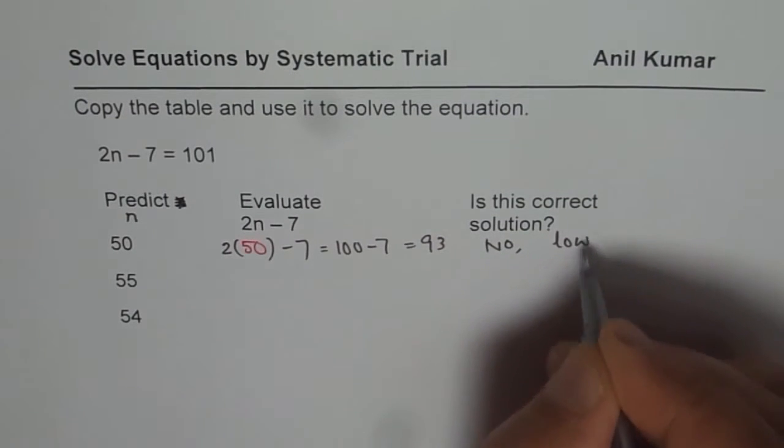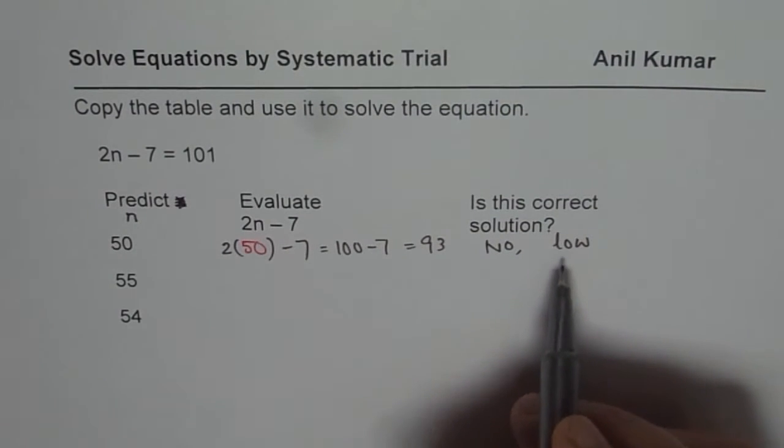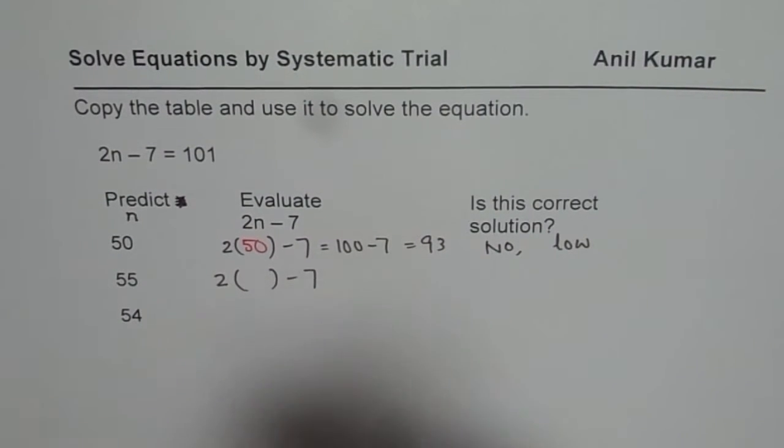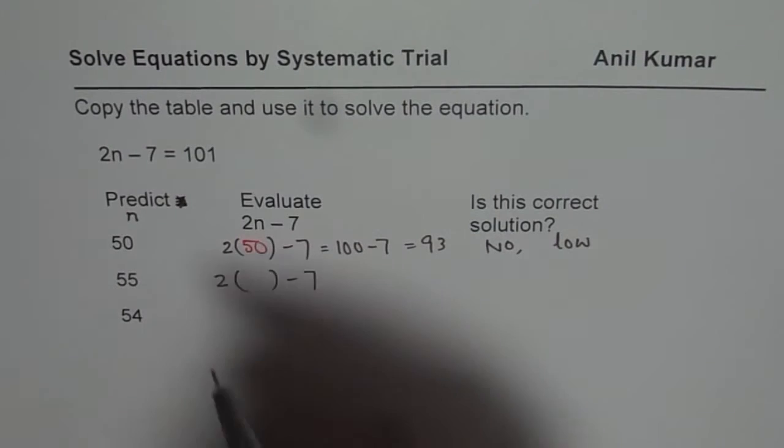We have a low value. Since we have a low value, we need a higher number. So next time we take a number which is higher than 50. So we select a value of 55.